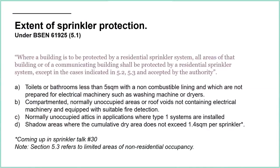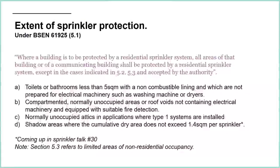A type one system is basically for domestic houses. So for residential blocks of flats, you wouldn't be allowed to omit sprinkler protection in unoccupied attics, whereas in a domestic house you would be. Then we have something called shadow areas, where the cumulative dry area does not exceed 1.4 square metres per sprinkler. I'm not going to go into that in this episode - that's coming up in Sprinkler Talk number 30, which covers residential sprinklers part three, where I'll explain shadow areas and how to calculate the cumulative dry area.